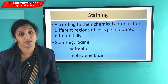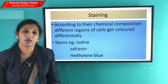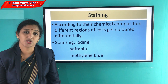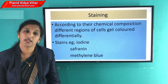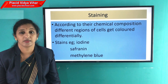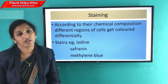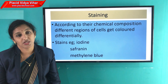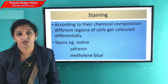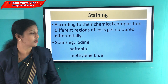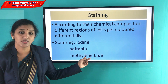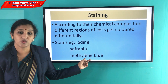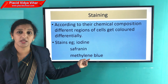What is the staining process? According to the chemical composition of the different parts of the cells, they get colored differently. The common stains used in our laboratory are: first, iodine; second, safranin; and third, methylene blue.